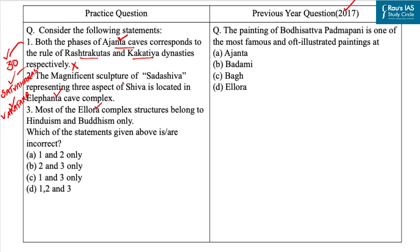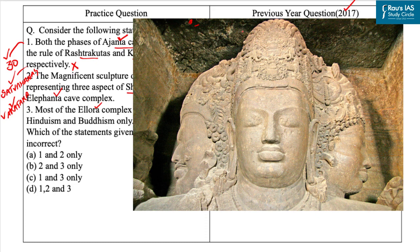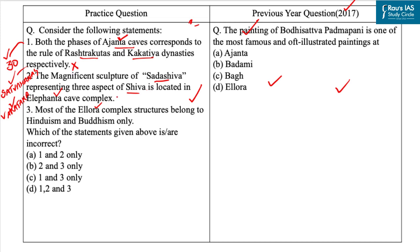The second statement: the magnificent sculpture of Sadashiva, representing three aspects of Shiva, is located in the Elephanta Cave complex. Elephanta, also known as the city of caves, is located on an island in the Arabian Sea close to Mumbai and contains rock art linked to the cult of Shiva. The 7-meter-high masterpiece Sadashiva dominates the entrance to Cave 1 and represents three aspects of Shiva — the creator, the preserver, and the destroyer — identified respectively with Aghora or Bhairava (left half), Tatpurusha or Mahadeva (center), and Vamadeva or Uma (right half). So the second statement is correct.